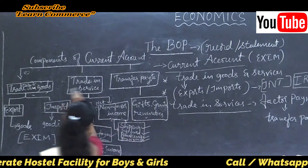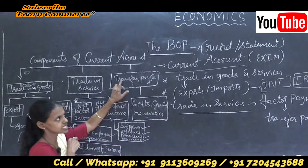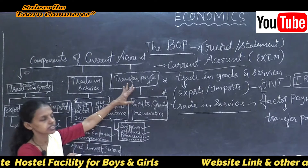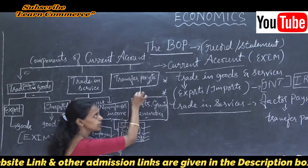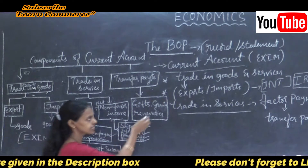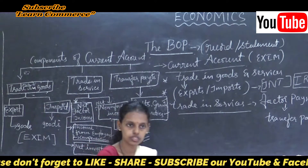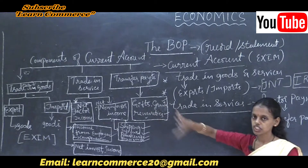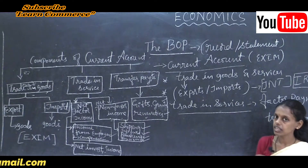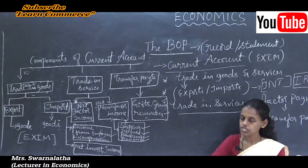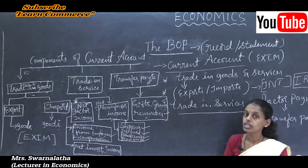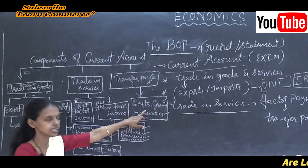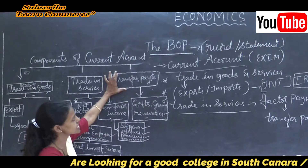Trade in goods is covered; trade in service is covered. Next is transfer payments. Transfer payments includes gifts, grants-in-aid, and remittances — while exchanging goods and services and undertaking international trade. International trade builds international relations through the exchange of gifts, grants-in-aid, and remittances with the rest of the world, which are said to be transfer payments. Transfer payments include sending and receiving gifts, receiving grants-in-aid, and remittances — all together called transfer payments.